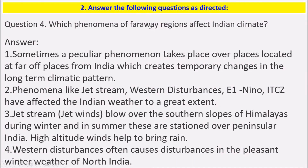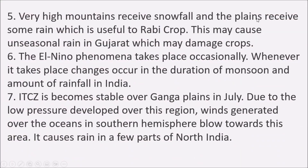Which phenomena of far-away regions affect Indian climate? Sometimes phenomena take place over places located at far-off places from India, which create temporary changes in the long-term climate pattern. Phenomena like jet streams, western disturbances, El Niño, and ITCZ have affected the Indian climate to a great extent. Jet streams blow over the southern slopes of the Himalayas during winter, and in summer these are stationed over peninsular India. High-altitude winds help to bring rain. Western disturbances often cause disturbance in the pleasant winter weather of north India; very high mountains receive snowfall and plains receive some rain, which is useful to the Rabi crop.